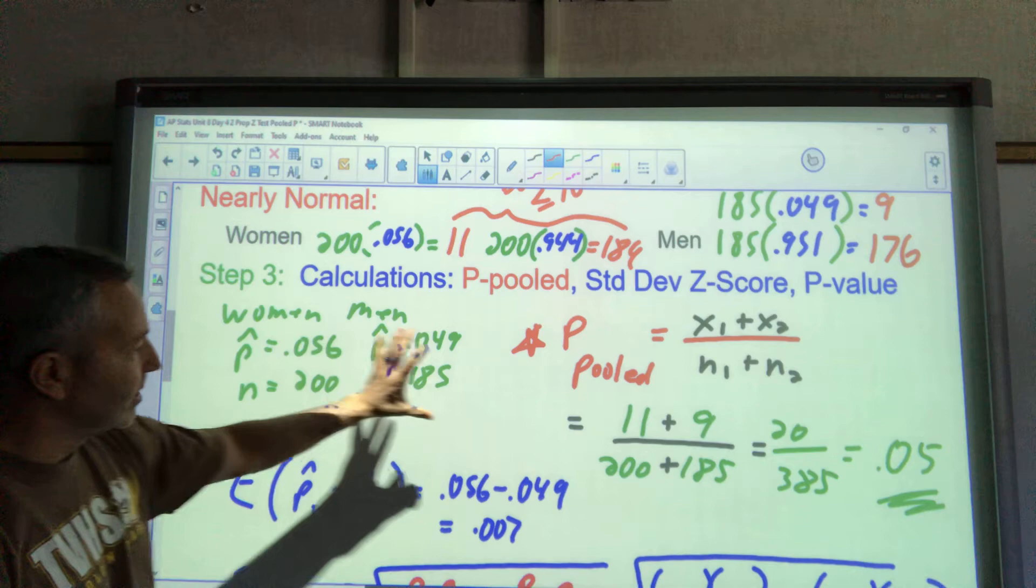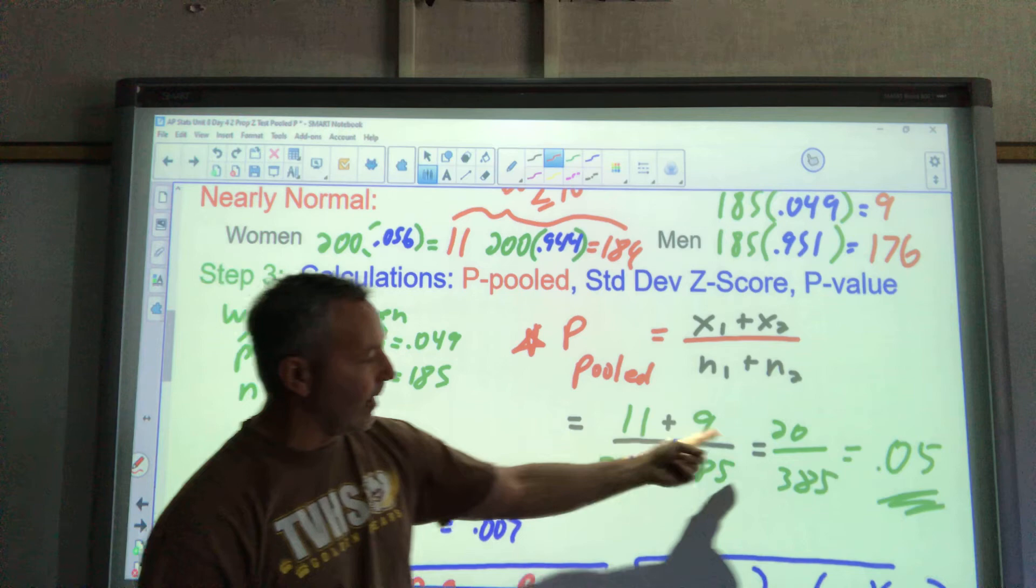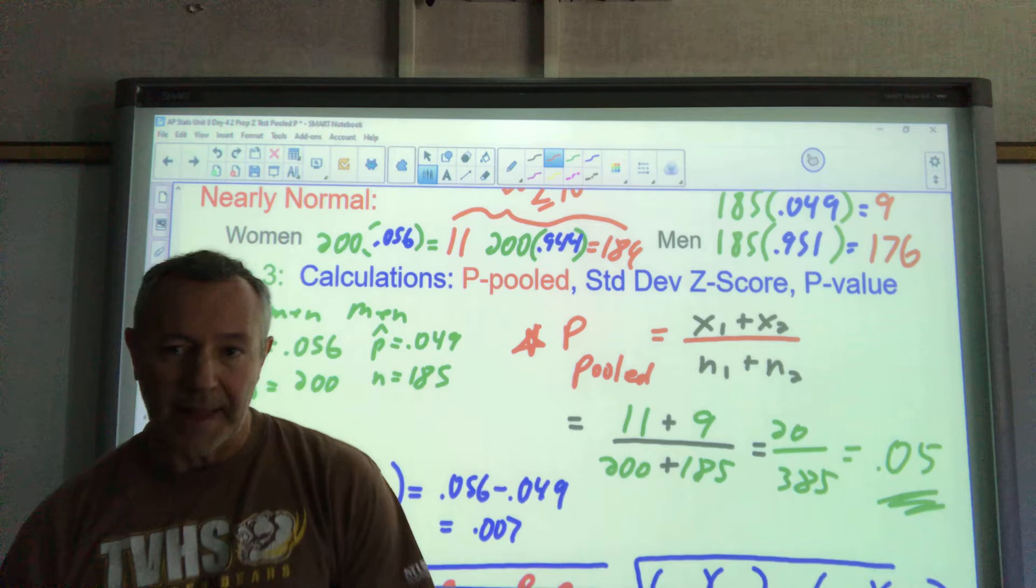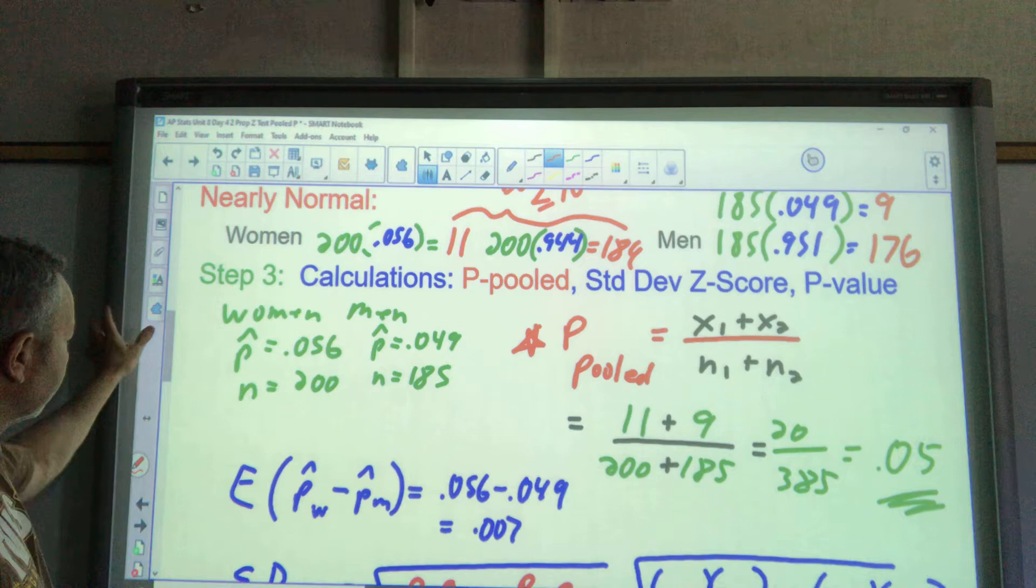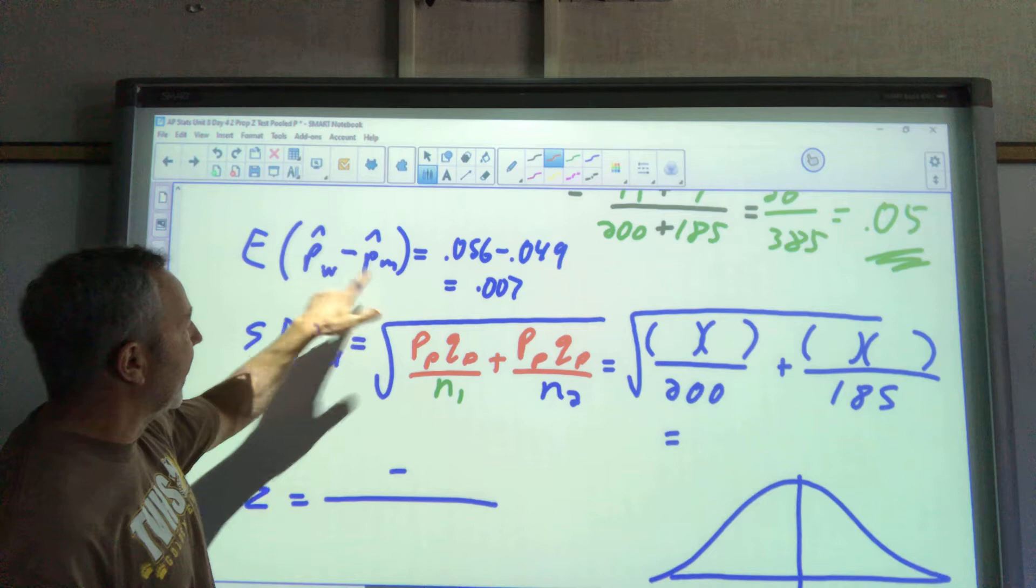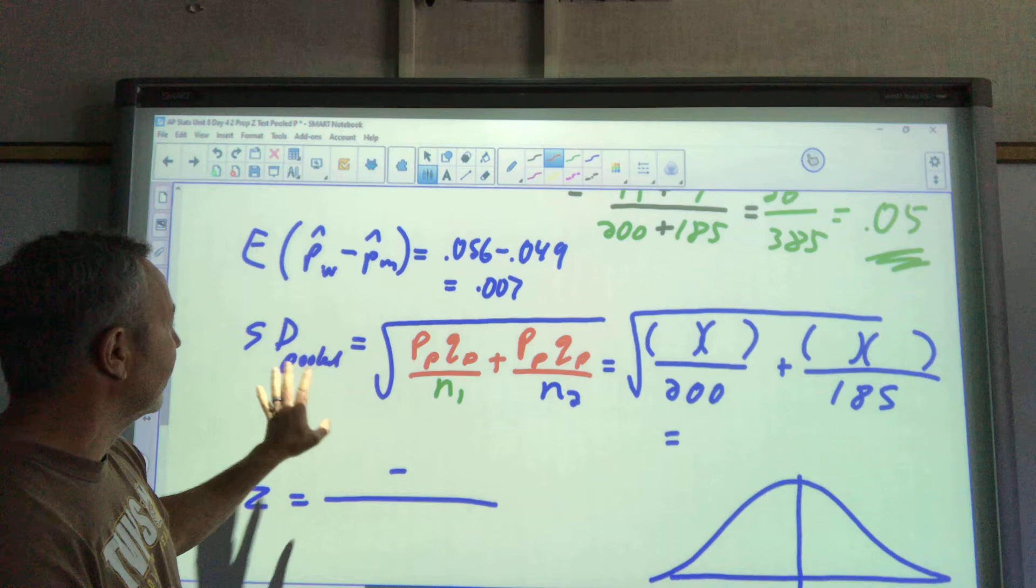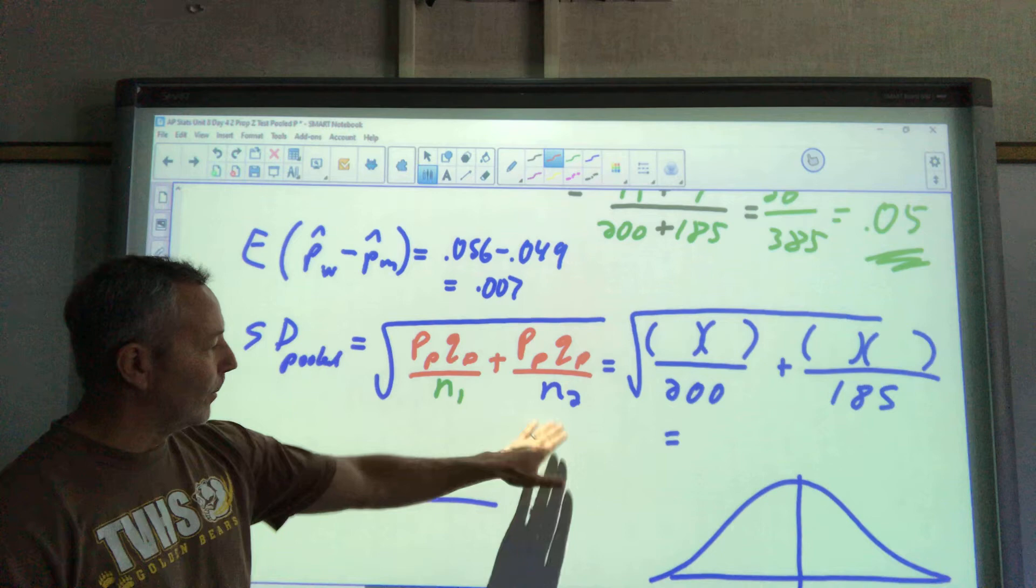Calculations. Again, we have to do P pooled here. I put my information here. Let's get P pooled right now. We saw that this is 11 successes out of the women, and we found that there were 9 successes out of the men. We're just adding our totals. We really found 20 successes, 20 people with green eyes out of 385, if they're all the same. And that's approximately 5% when I do that math. Next thing I have to do is find my expected difference. According to our hypothesis, we think it should be zero. But what did we find? That the women minus the men was 0.056 minus 0.049, which is 0.007. That's our difference that we found in our problem.